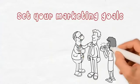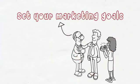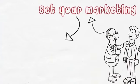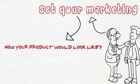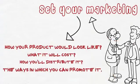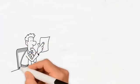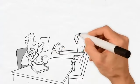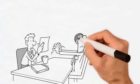The next step in writing a business plan is setting up marketing goals. These are those goals that define how your product would look like, what it will cost, how you'll distribute it, and the ways in which you can promote it. Most businesses do plan this, but they neglect the most important areas.